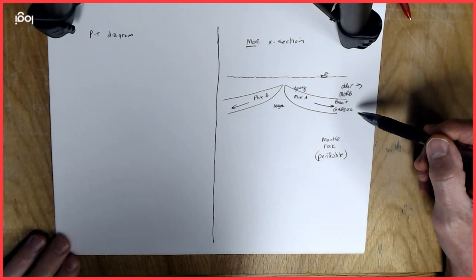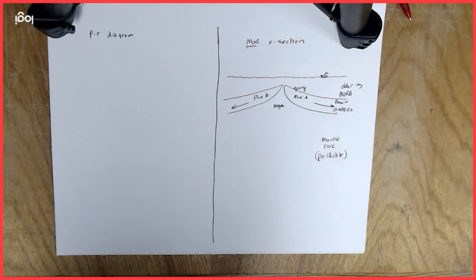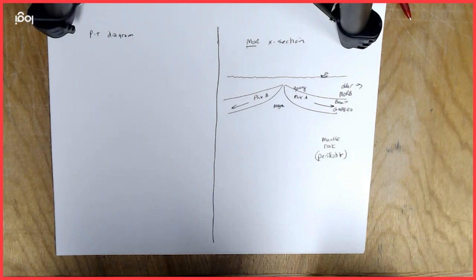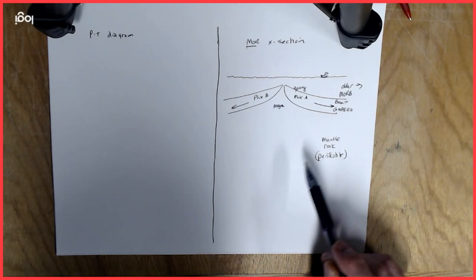So we've got our mafic rocks here, those are what's in the crust, and they're moving as plates along with the uppermost mantle rock. But we're primarily interested in how this crust is formed here, the basalt and the gabbro, and our assumption is that it is formed from the mantle, it's derived from the mantle rock.